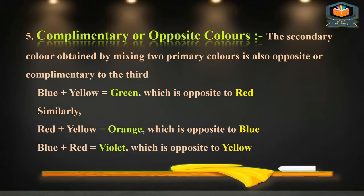Complementary or opposite colors: the secondary color obtained by mixing two primary colors is complementary to the third primary color. For example, blue mixed with yellow gives green, which is opposite to red. Similarly, mixing blue and red gives violet, which is opposite to yellow.